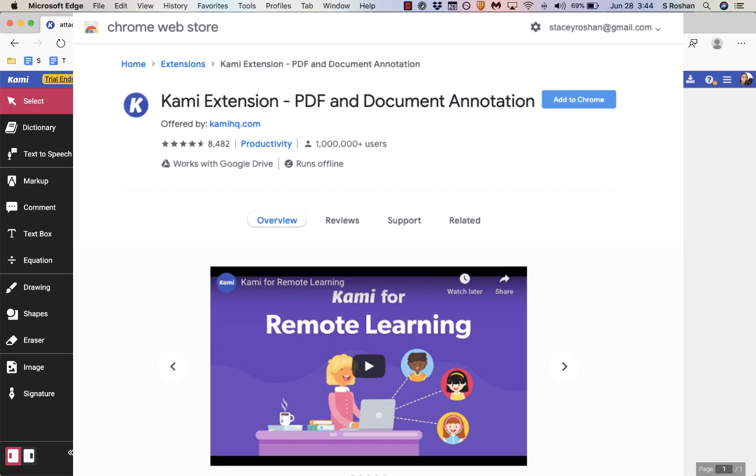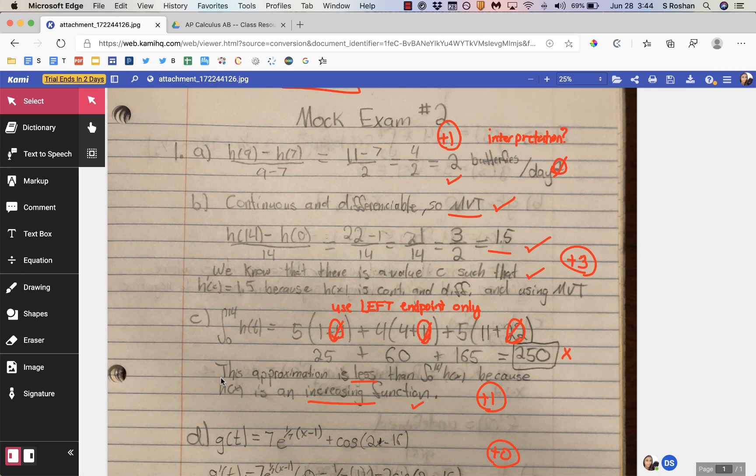What Kami is: Kami is connected to your Google Drive. Basically, once you set up this connection, you can right-click on any document in your Google Drive and open it with Kami.